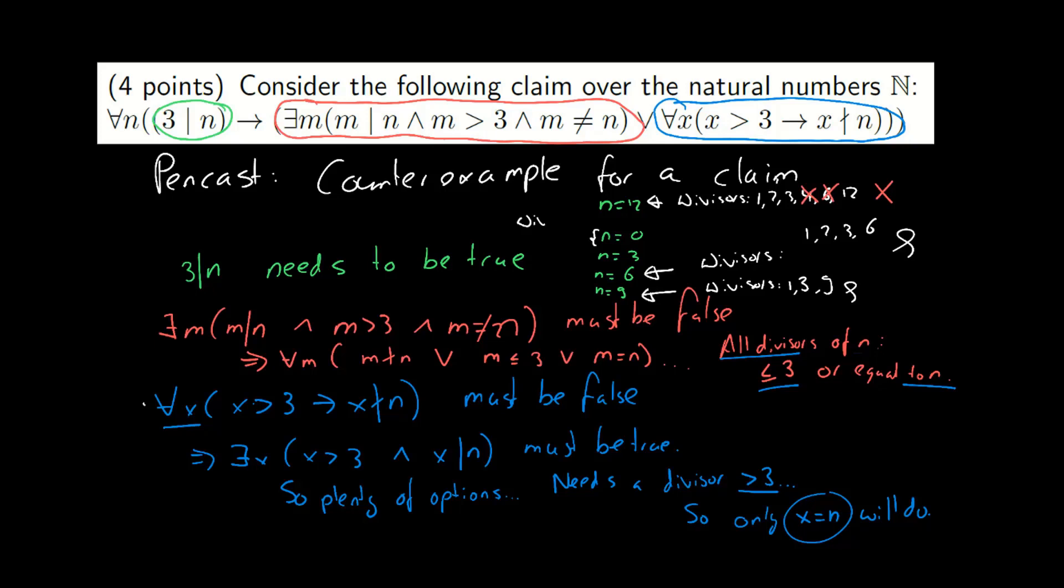What about n equals 0 or n equals 3? Well, there's a problem with them as well. And the problem is in the blue part. Because the numbers do need a divisor strictly larger than 3. And while 0 has many divisors, so it also has divisors larger than 3 and equal to n, which isn't allowed by the red part. And n equals 3 has only 2 divisors, 1 and 3, so it doesn't have a divisor larger than 3, which the blue part says that it needs.